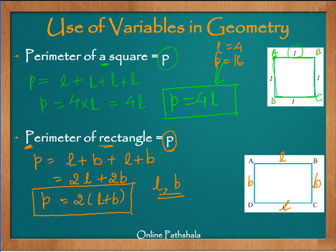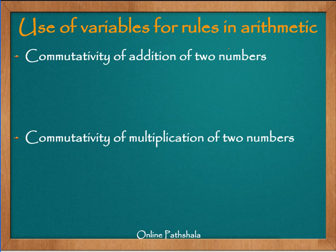That was the example of use of variables in geometry. Now let us see some more examples from arithmetic. For the time being, let us consider the whole numbers — that is the numbers from 0 to infinity. Now, commutativity of addition — we have already studied this property.